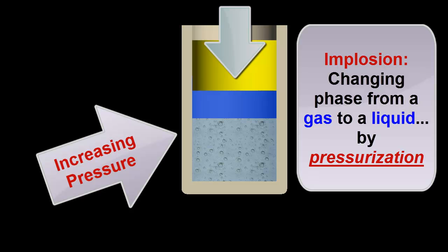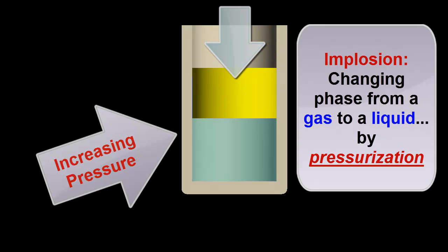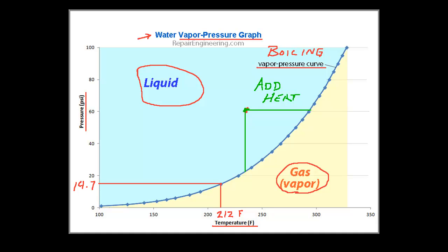I'll resume the animation and repressurize the cylinder. Going back again to the vapor pressure graph, we have seen that water can be caused to boil by either adding heat or by lowering its pressure. It's also possible to cause the water to boil by any combination of changes to its temperature and pressure. So let's see how this applies in an actual application.